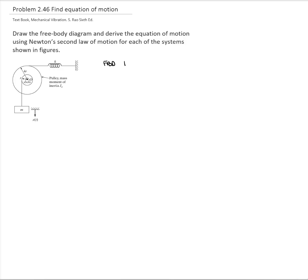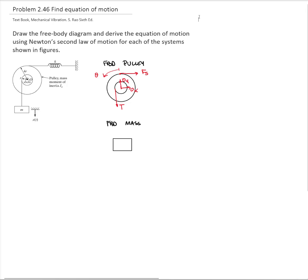I will draw the free body diagram of the pulley and the free body diagram of the mass. We have two reactions at the pin, the force of the spring, and since the block is moving down, I will assume that the rotation of the pulley is in this direction. So we have a force of the spring to the left, and then we have the tension of the rope. We draw the free body diagram of the block with the tension as action and reaction. The weight will cancel out with the static deflection of the spring.